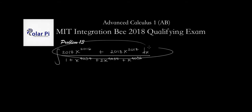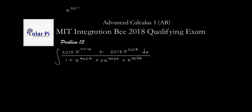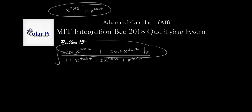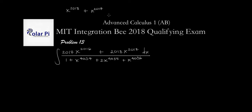Well, if we work backwards from the numerator, we know that we had to have taken the derivative of x to the 2018 plus x to the 2017 to get to the numerator. This here is exactly the derivative of that. We definitely like this convenience.